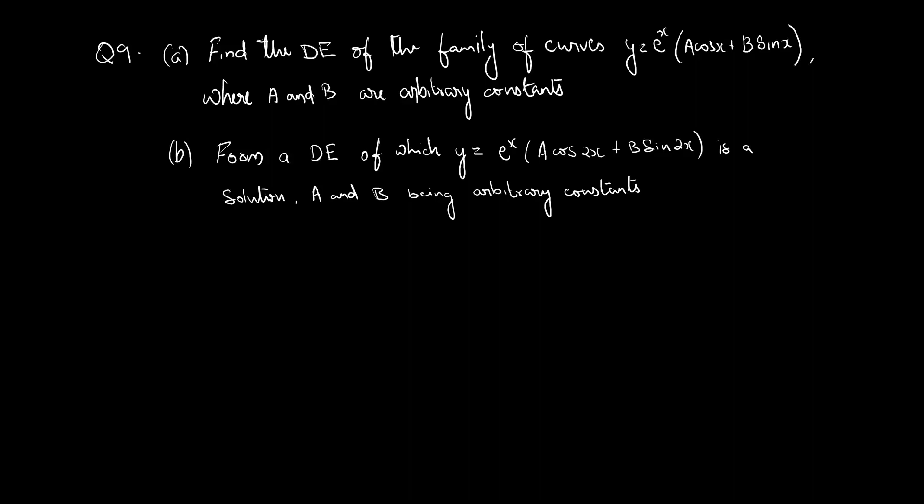Question 9 has two parts, part a and part b. Part a: find the differential equation of the family of curves y equal to e raised to x into a cos x plus b sin x, where a and b are arbitrary constants. Part b: form a differential equation of which y equal to e raised to x into a cos 2x plus b sin 2x is a solution, a and b being arbitrary constants.